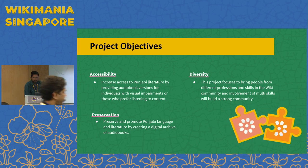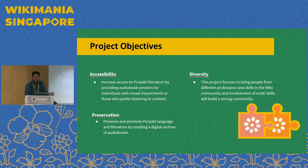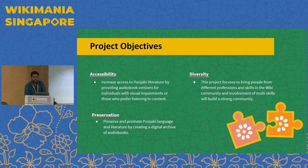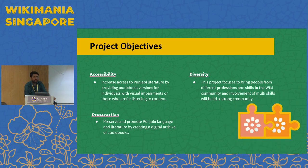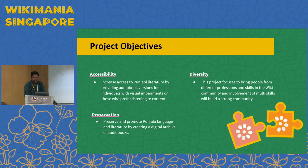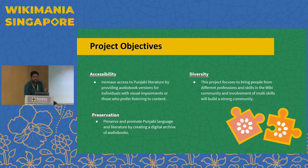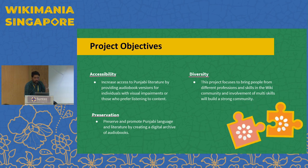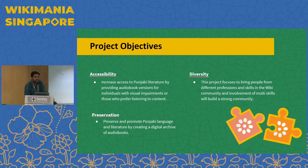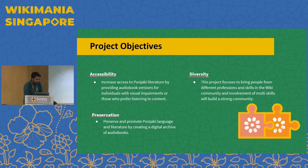The third objective is diversity. We have seen in our community that most people want to join and be part of Wikipedia, but they don't want to make edits or proofread books. But some people have expertise in special fields. With this project, we got some people from a theatre group — they have the quality to use their voice better than normal people. So this project is also creating diversity in our user group because more people are coming in.